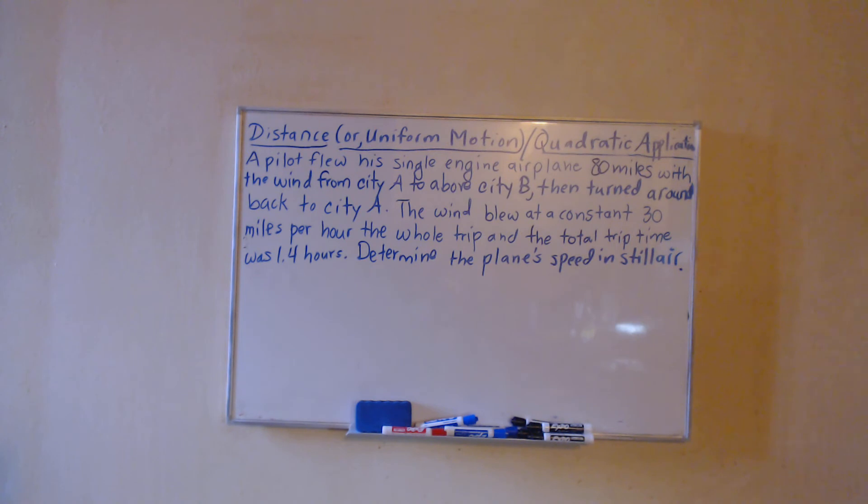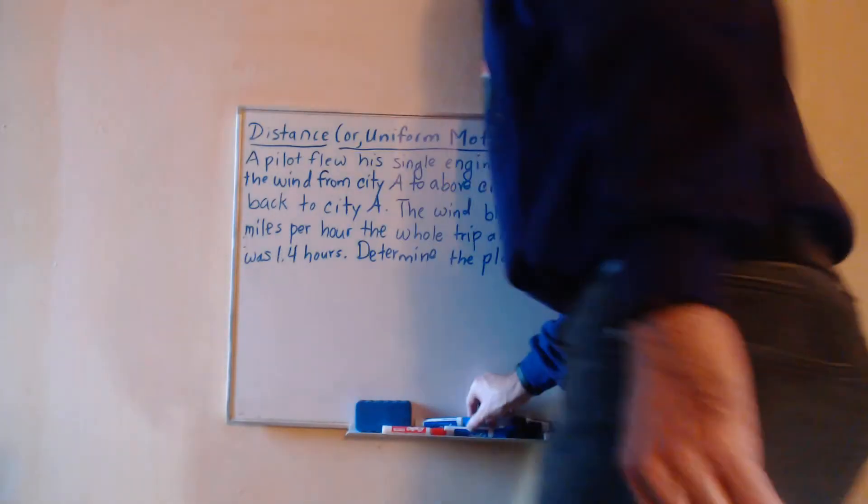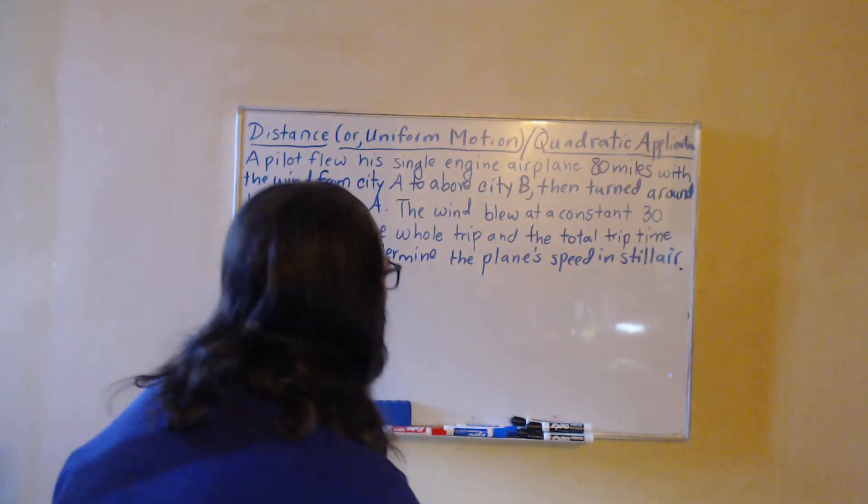In this question we have a distance of 80 miles between two cities, a wind speed blowing at a constant 30 miles per hour during the whole trip, and we're looking for the speed of a plane. Finally, we've got a time mentioned, a total trip time where we're going from one city to the other and then straight back, that total being 1.4 hours. So we should be thinking about the uniform motion formula, or as it used to be called the distance formula. These days we have rate times time equals distance.